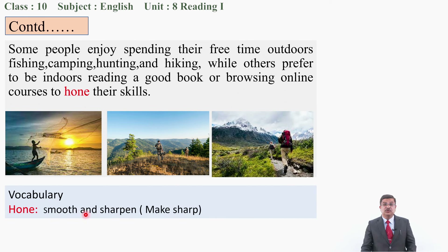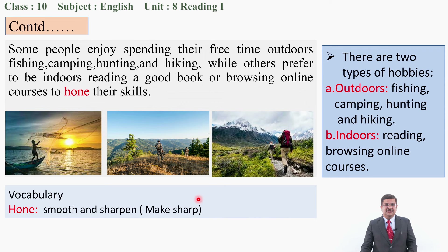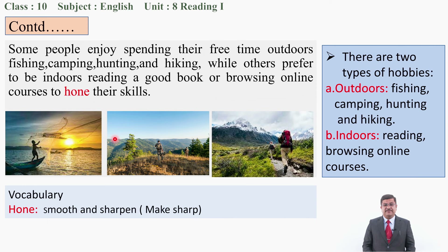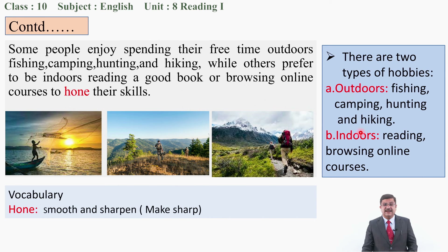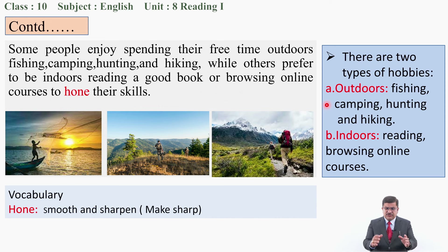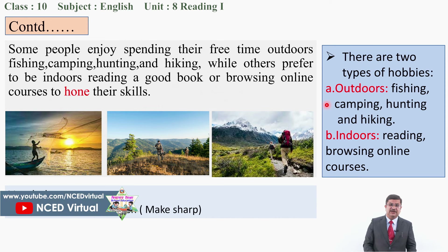The meaning of hone is: smooth, sharp, make sharp. When we talk about the third paragraph, we summarize it this way: there are basically two types of hobbies. Some people are crazy about outdoor activities, and some others are interested in indoor activities. Hobbies can be categorized into two types — outdoor activities: things we do outside our home; and indoor activities: things we do inside our home.